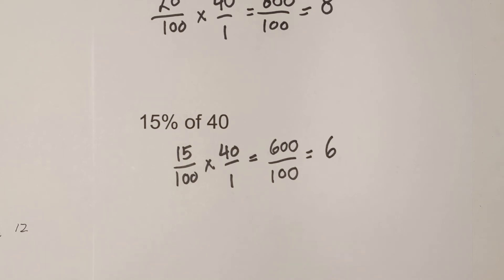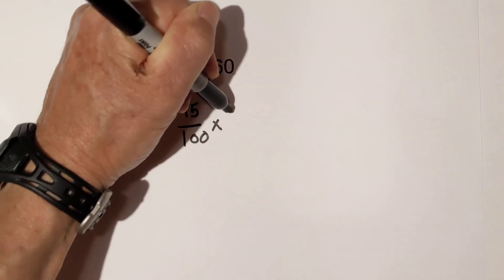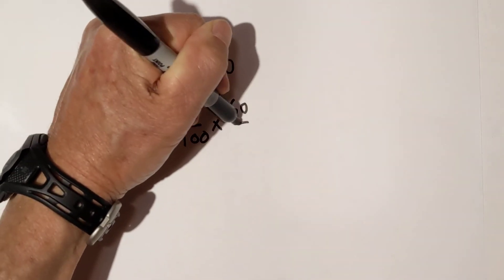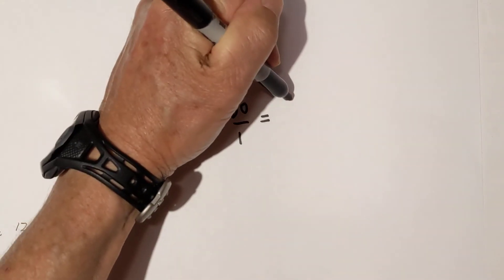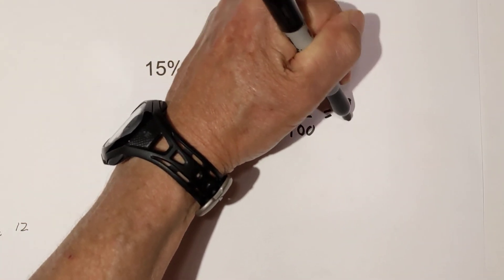Let's work one final problem and the last problem is 15% of 60. So let's get started. 15 over 100 times 60 over 1. 15 times 60 equals 900 over 100 which equals 9.